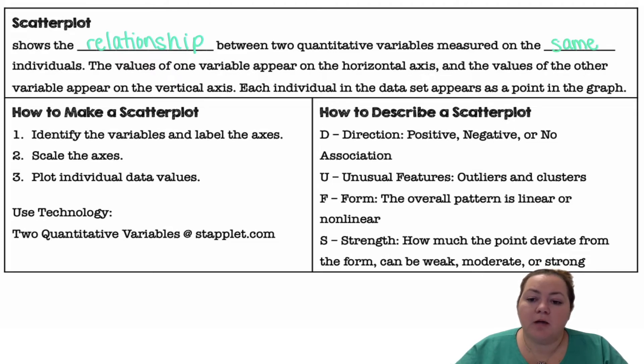For direction, we're going to say it's positive, negative, or no association. Unusual features would be any outliers or clusters. The form is the overall pattern - is it linear or nonlinear?